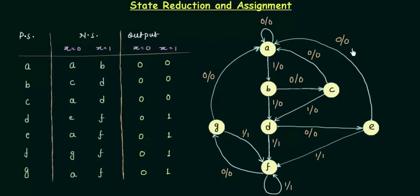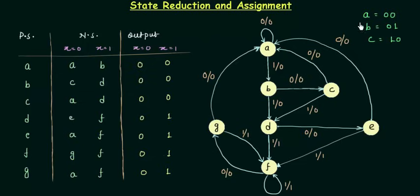A state assignment is nothing special - it is just a simple assignment of binary codes to your states. For example, if I have three states A, B, and C, then I can assign A equal to 00, B equal to 01, and C equal to 10. This is required because we will use it in the state table, and using it we will develop the K-map and then the circuit.